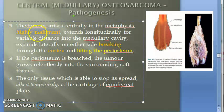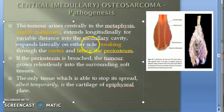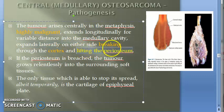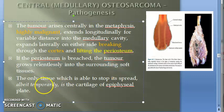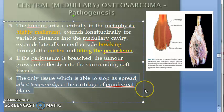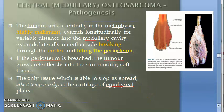To summarize: the tumor is highly malignant, extends longitudinally into the medullary cavity, and laterally breaks the cortex and lifts the periosteum. Once the periosteum is breached, the tumor grows relentlessly into the surrounding soft tissue. The only structure that is able to stop its spread in one direction is the epiphyseal plate.